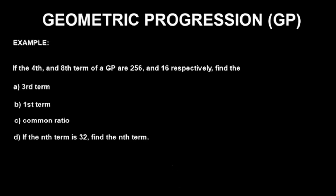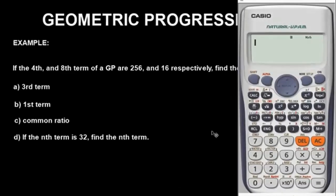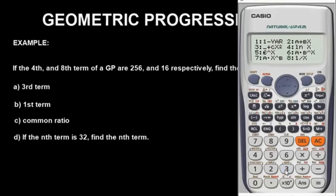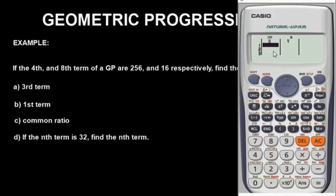These are very, very simple with the calculator. To begin, you will have to put the calculator in statistics mode. To do that, press the mode button and go for category 3, which represents statistics. Once you press 3, then press option 6, which represents GP — geometric progression. Once you get to this point, begin to input the values, where the X values represent the number of terms in the sequence.